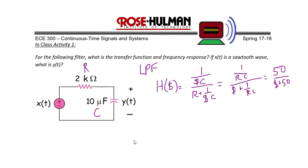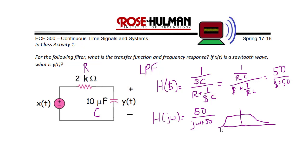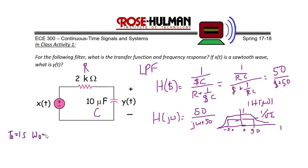The frequency response is found by replacing s with jω, giving h(jω) equals 50 over (jω plus 50). The shape of this low pass filter has a maximum of 1, with cutoff frequencies at positive and negative 50 radians per second where the value is 1 over the square root of 2. From the prior problem, the sawtooth has T₀ equal to 1 second and ω₀ equal to 2π radians per second. The Fourier coefficients x(k) equal 2j over (πk) when k is not equal to 0, and 0 when k equals 0.